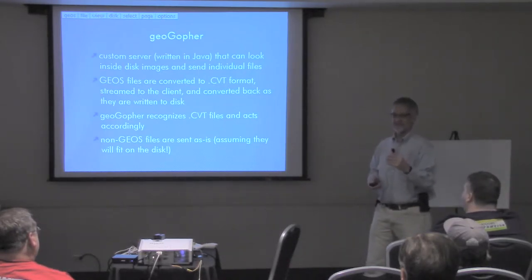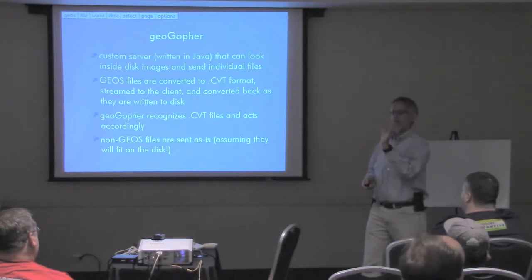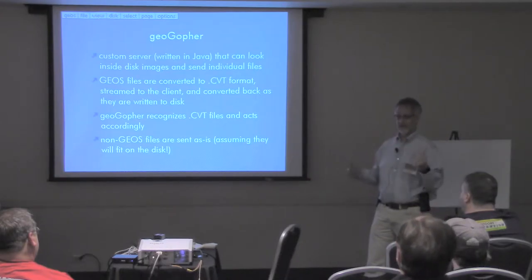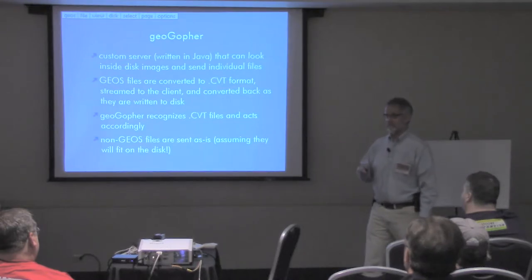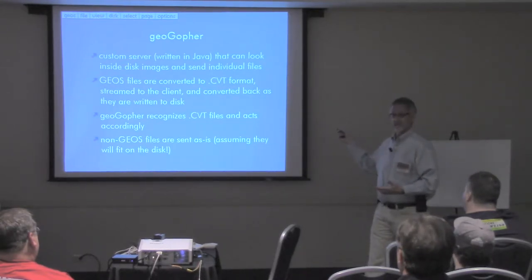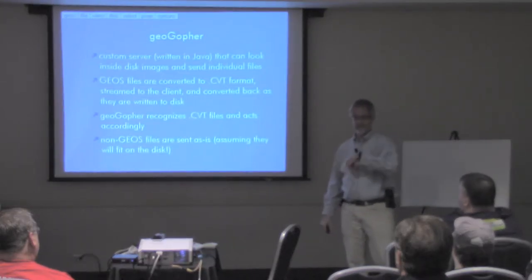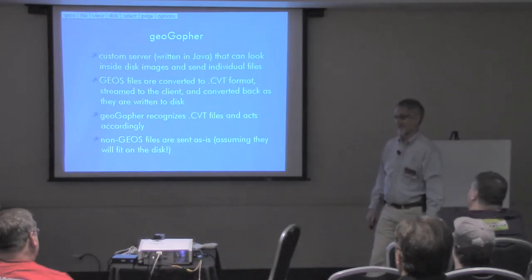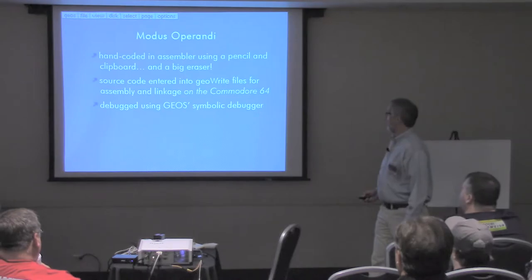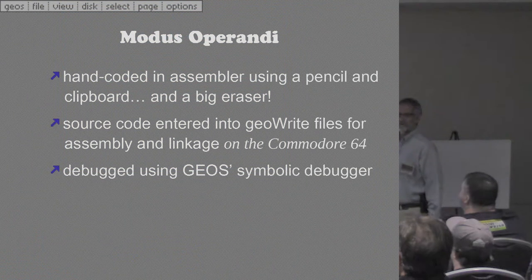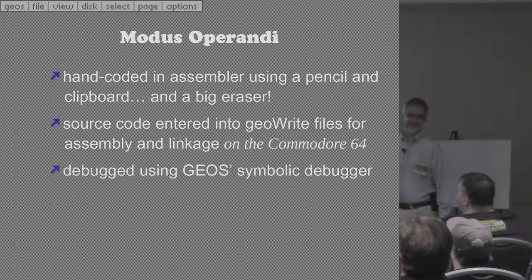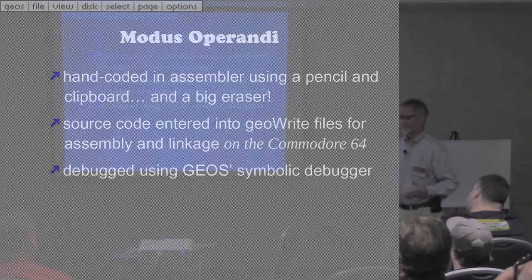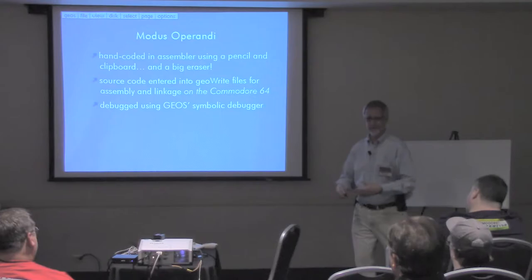As the client receives the stream, in the first few bytes, if it sees the CVT header it goes 'oh, it's a CVT file' and turns it into a regular native GEOS file and puts it on the diskette. If somebody on their PC using a regular Gopher client clicked on one of those files they'd get a binary in CVT format — you could take that CVT file, put it on a Commodore 64, run the convert program, and get a GEOS file. But I'm doing it all on the fly.